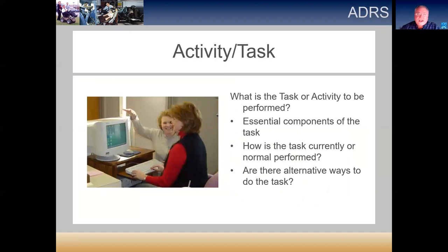The second part is the task or activity they need to perform. During this part of the assessment, we break down the essential components, determining the different steps involved in performing the task. We look at how the task is typically performed — for example, someone on an assembly line trained to perform it a specific way — and then start looking at alternative ways that person can perform the task, such as if they're having difficulty putting a washer on a bolt.